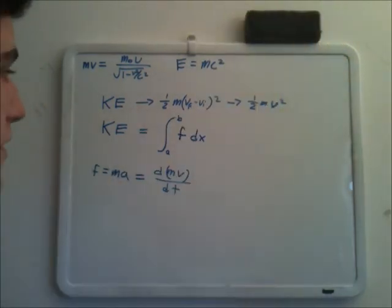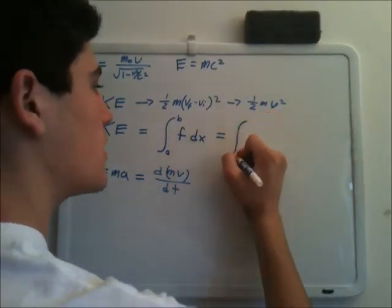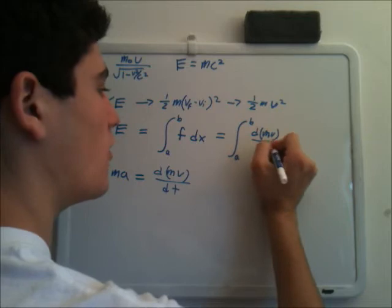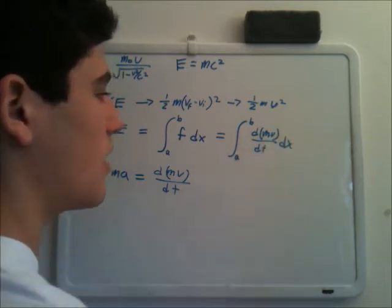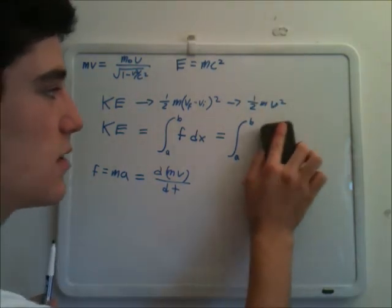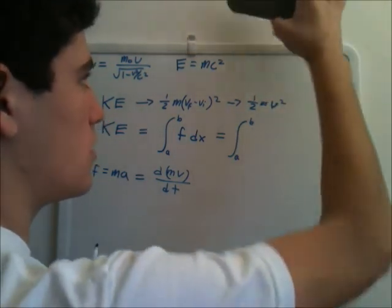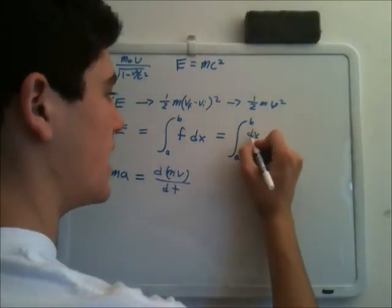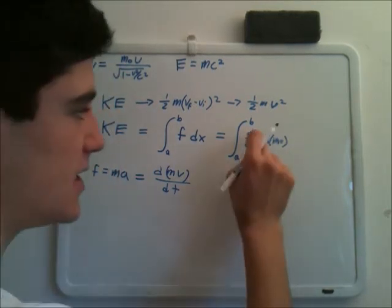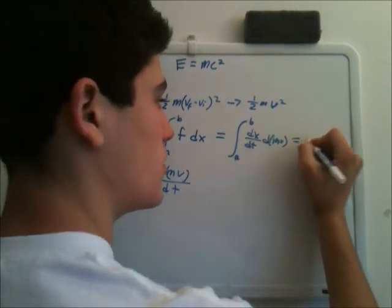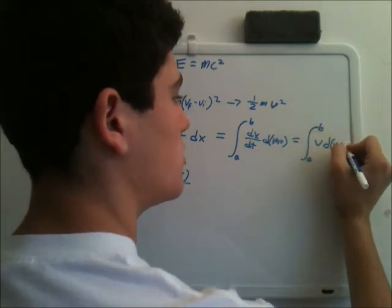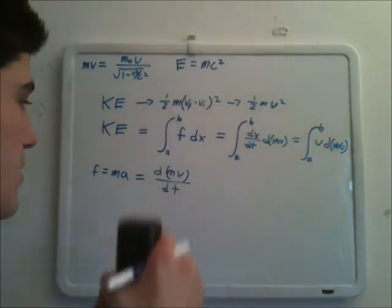And now if we plug that into the equation over here, we get kinetic energy equals the integral from a to b of dmv over dt times dx. We can rewrite this, so keep this in your mind, dmv over dt, as dx over dt times dmv. And we know from basic calculus that dx dt is velocity. So this equals the integral from a to b of v with respect to momentum, the integral of velocity with respect to momentum.